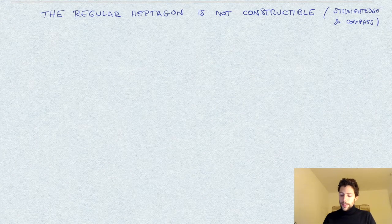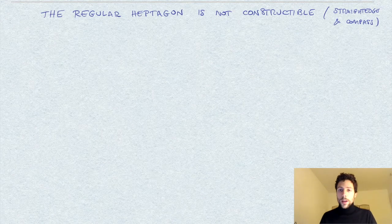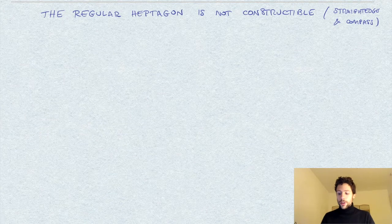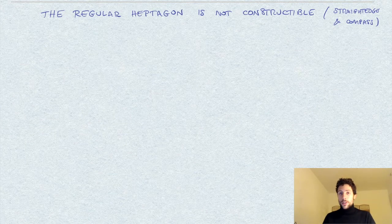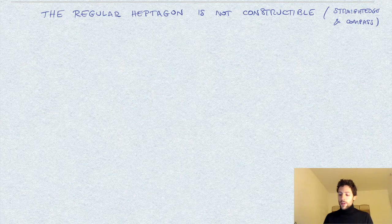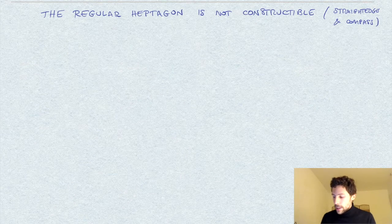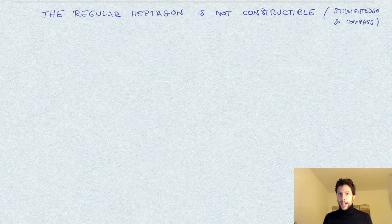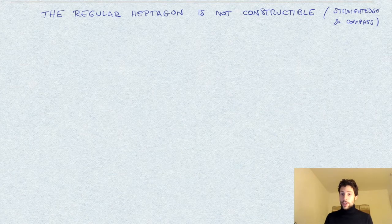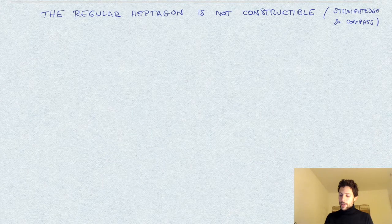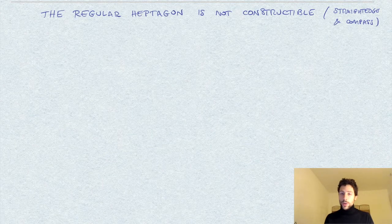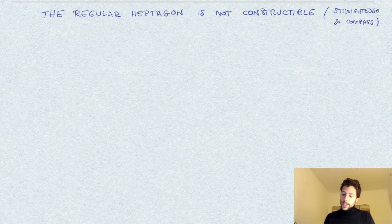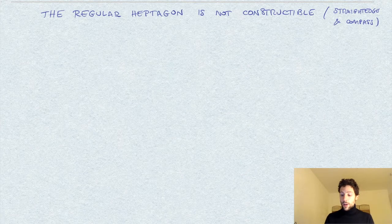Let's give a proof that the regular heptagon, the regular polygon with seven vertices, is not constructible. We are talking in the context of constructions with straightedge and compass, classical constructions of plane figures which we can prove or disprove the existence of by means of Galois theory or field theory.